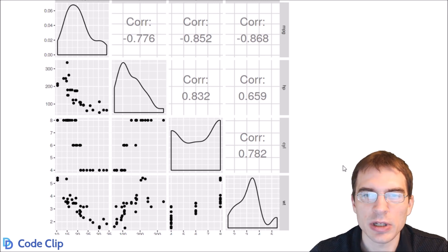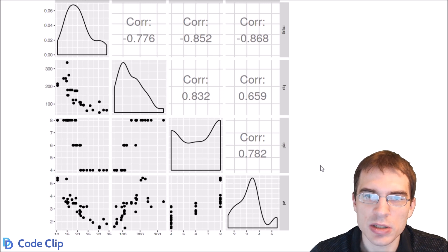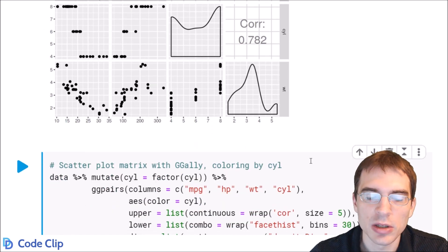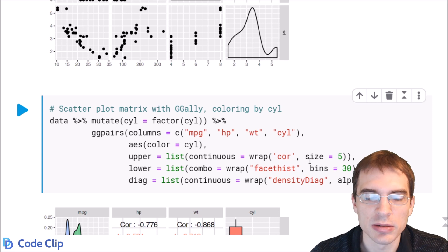Now I'll just give another example of using ggpairs in a slightly more complicated way. We're going to split out based on the cylinder.